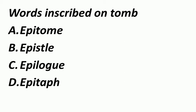Words inscribed on tomb — कब्र को बोलते हैं tomb. कब्र के ऊपर जो पत्थर पे नाम लिखा जाता है उसको बोलते हैं Epitaph. Epitome मतलब a person or a thing that is a perfect example of a particular type or quality. Epistle का मतलब है a letter. Epilogue मतलब उपसंहार — conclusion, a short passage added at the end of a book.